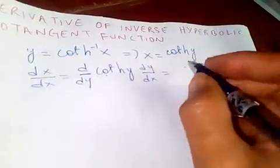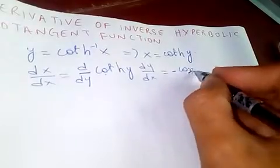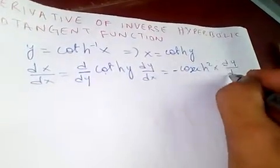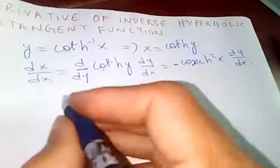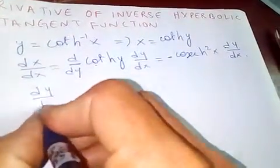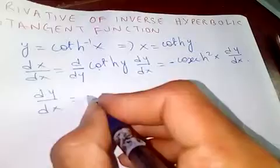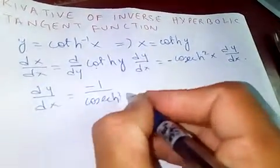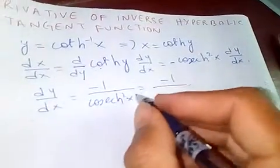Now you find dy/dx. This is just one, so minus one over cosech hyperbolic squared y. So we know cosech hyperbolic squared is in terms of coth.